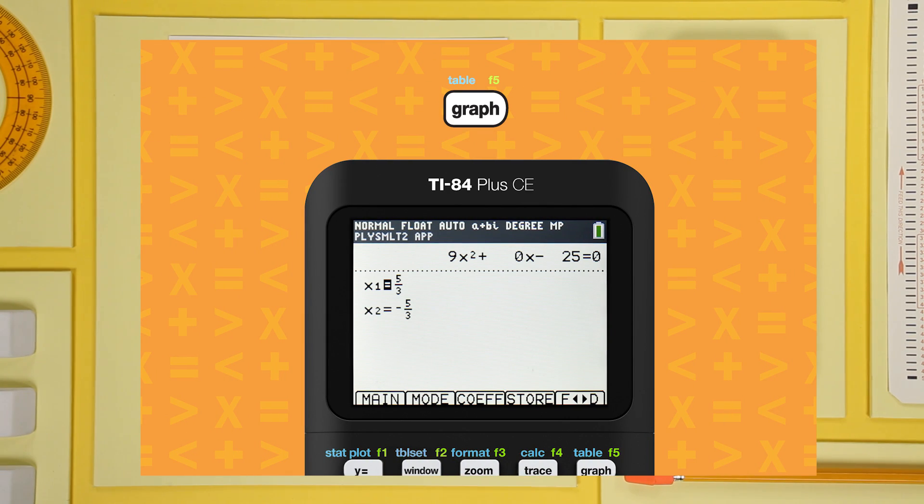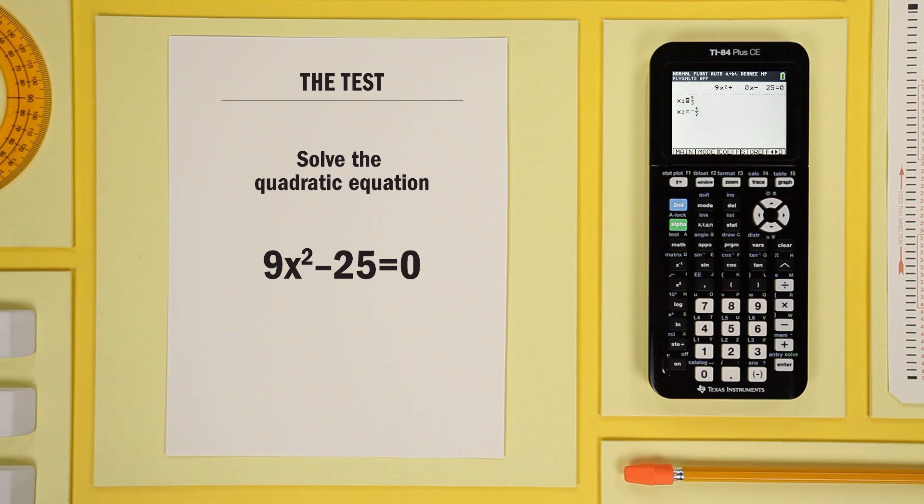If you want the solution in decimal form, press graph again. That key toggles between fractions and decimals. So the solutions are x equals five-thirds and x equals negative five-thirds.